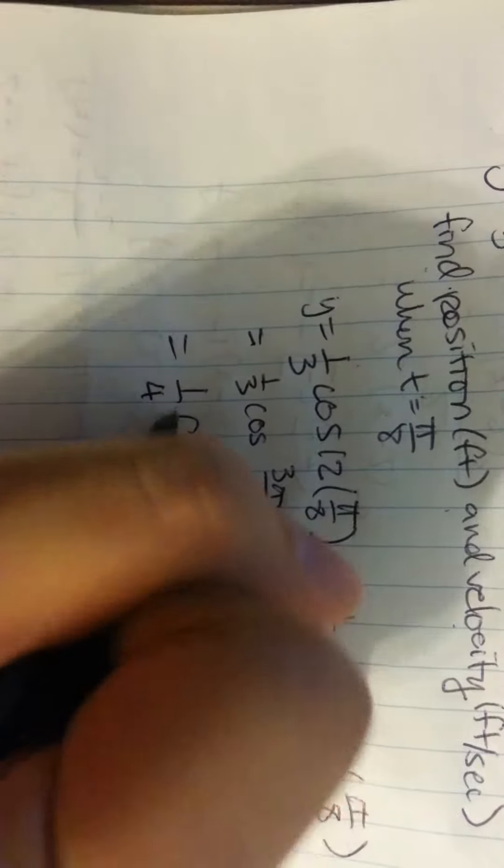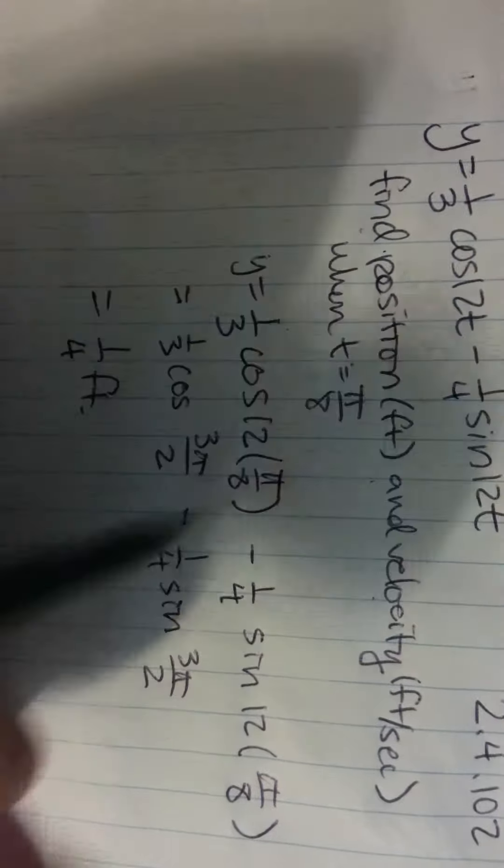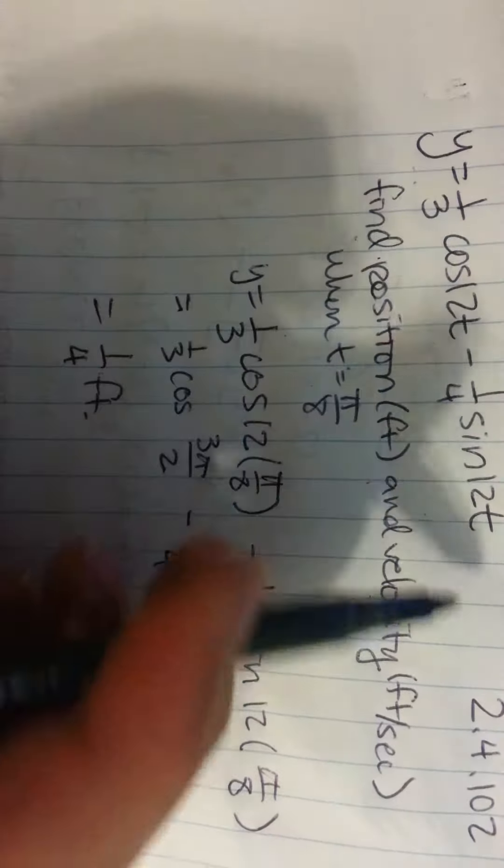To find the velocity, you have to take the derivative of the position formula to get velocity.